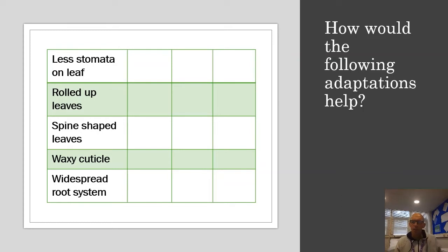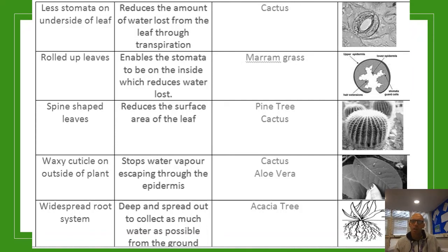Then I'd like you to have a think about how these adaptations would help: stomata. If you remember from when we did plants and organisation, stomata are those little holes on the leaves that allow carbon dioxide to come in and oxygen to leave — but it's also where plants lose water. Think about how those five things listed would help. Just pause here for a second and see if your answers match up.